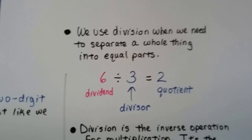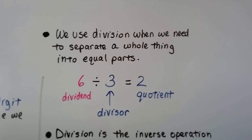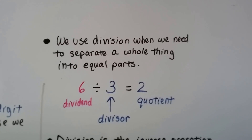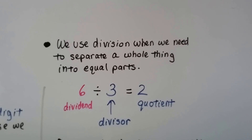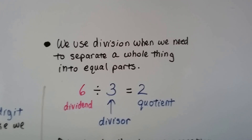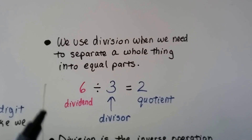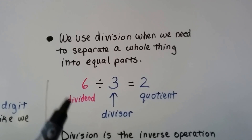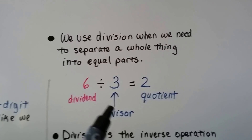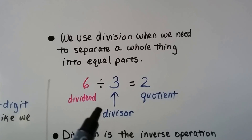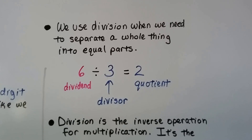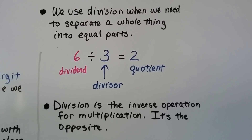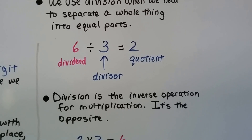We use division when we need to separate a whole thing into equal parts. Say you have a candy bar and two friends — you want to split it into three equal parts. Here we have six divided by three equals two. The six is the dividend, the three is the divisor. The big number is the dividend, the number it's being divided by is the divisor, and the answer is the quotient. Division is the inverse operation of multiplication — it's the opposite.